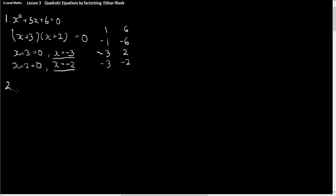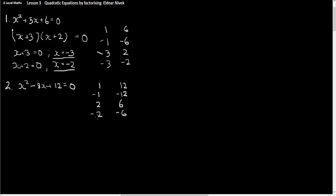For the second example, we have x squared minus eight x plus twelve. We're looking for the factors of twelve that add together to give minus eight. If it's minus eight and plus twelve, the factors we're looking for have got to be both negative. Minus one and minus twelve don't add together to give minus eight. Minus two and minus six: minus two times minus six is plus twelve, and minus two plus minus six is minus eight.